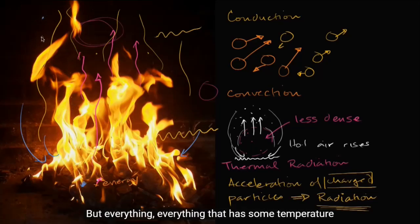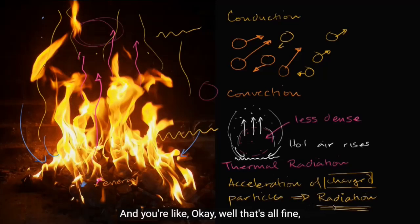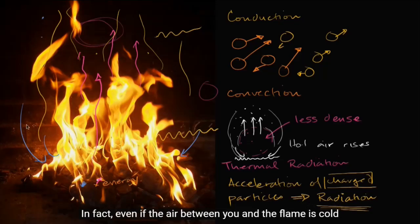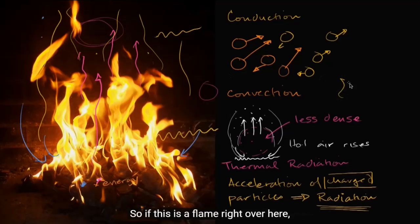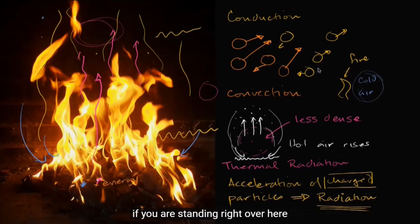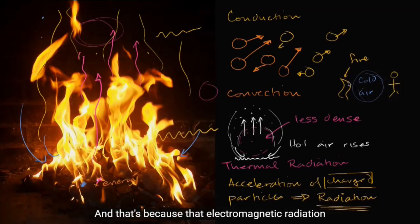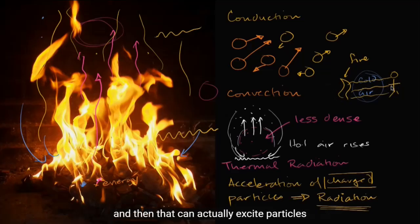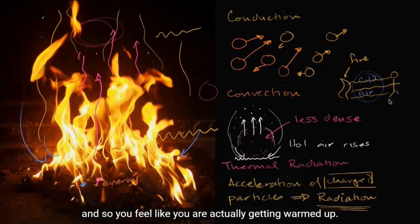Everything that has some temperature is releasing electromagnetic radiation. You might ask how that is a form of energy transfer. Well, if you've ever sat next to a flame, you feel the heat — even if the air between you and the flame is cold, you would still feel like you're getting warm. If this is a flame and you're at a campfire where the air is 30 degrees, standing at a distance you would still feel heat. That's because the electromagnetic radiation is being emitted from the air particles we perceive as fire, and it can actually excite particles on your skin, transferring energy to your skin so you feel like you're getting warmed up.